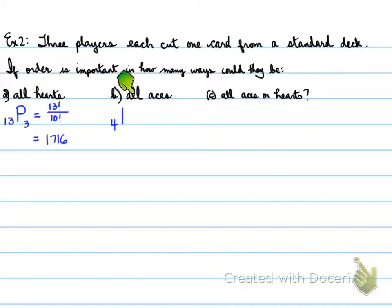Next, all aces. We have four aces, and we want to choose three of them to be aces. That means 4! / 1! - the reason it's 1 factorial is 4 minus 3. The result is 24. So there are only 24 possible ways that we could have all aces.